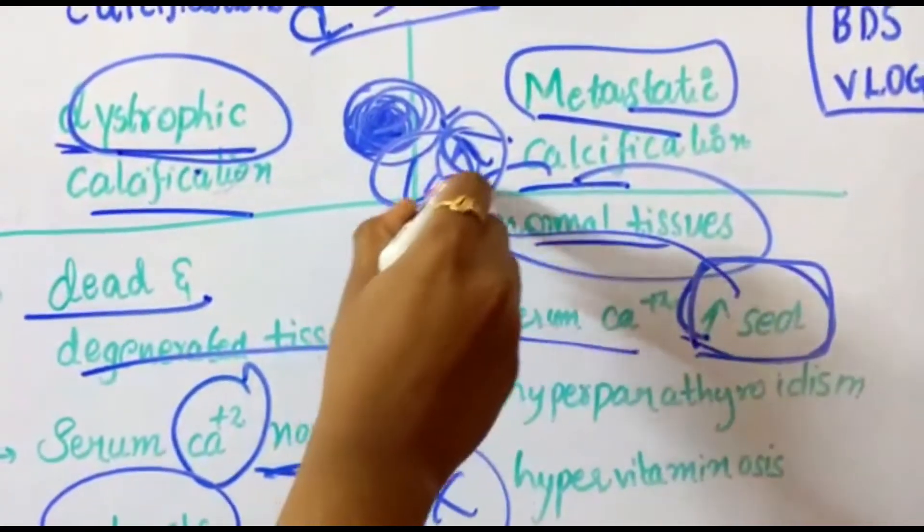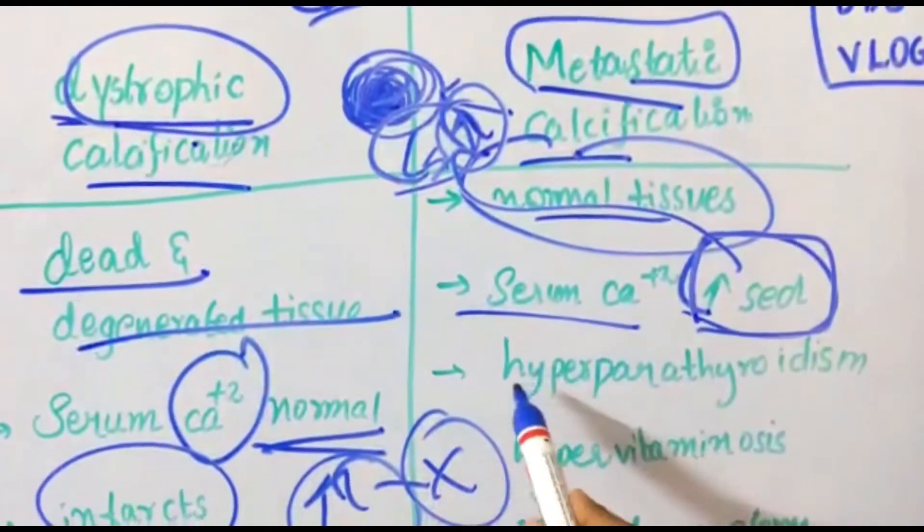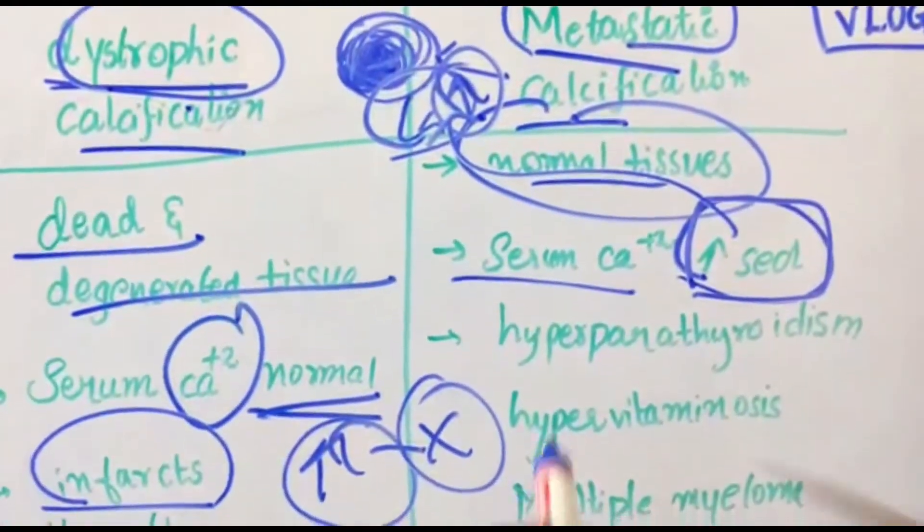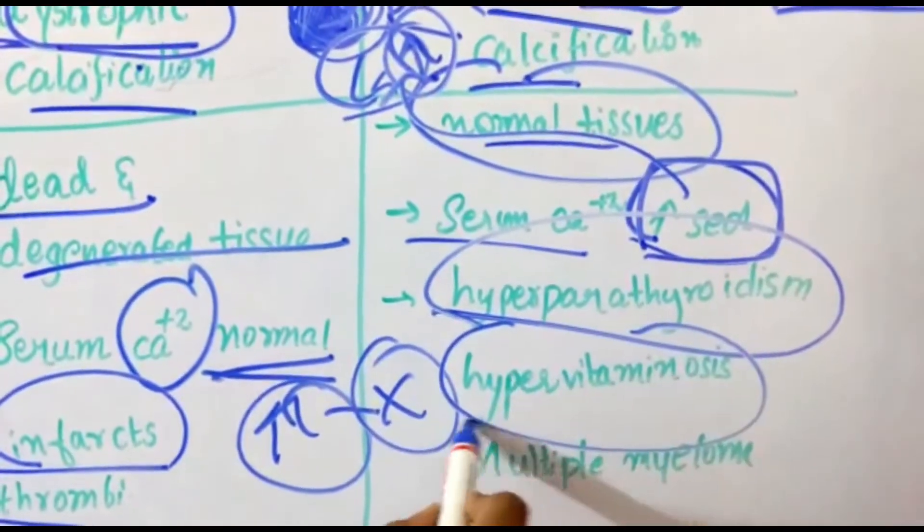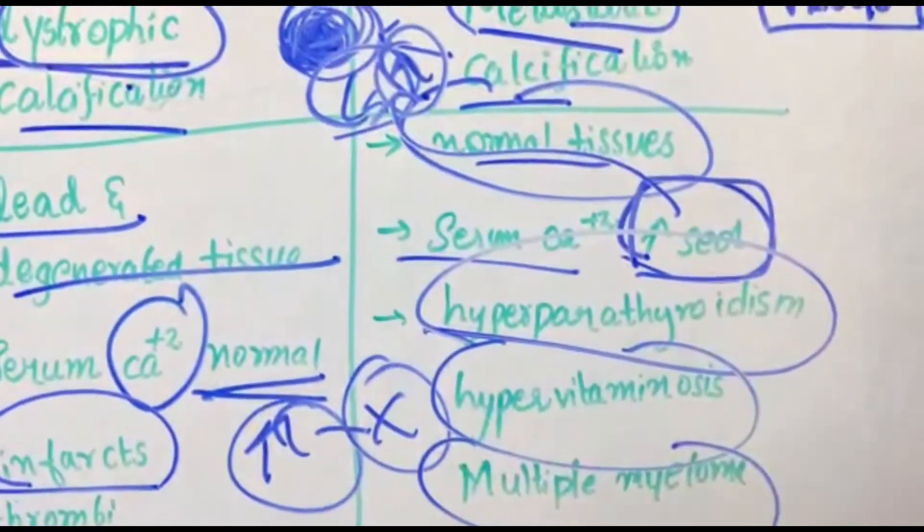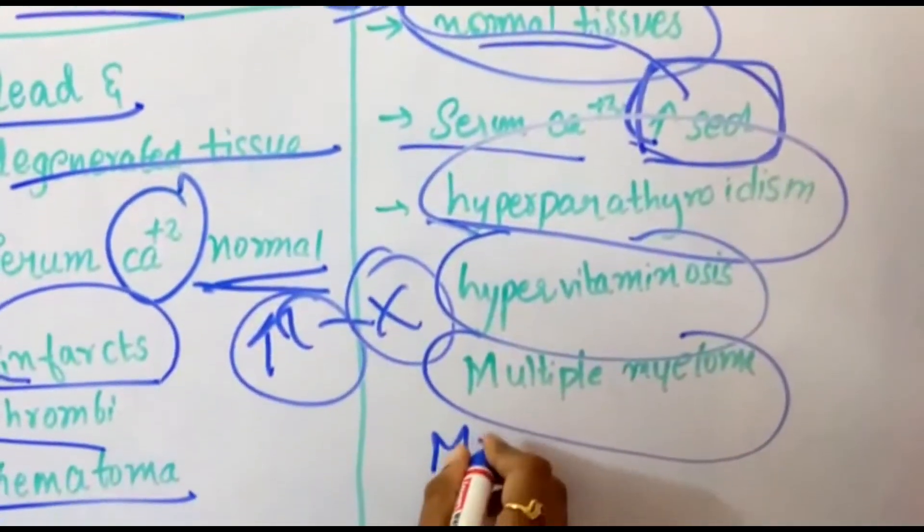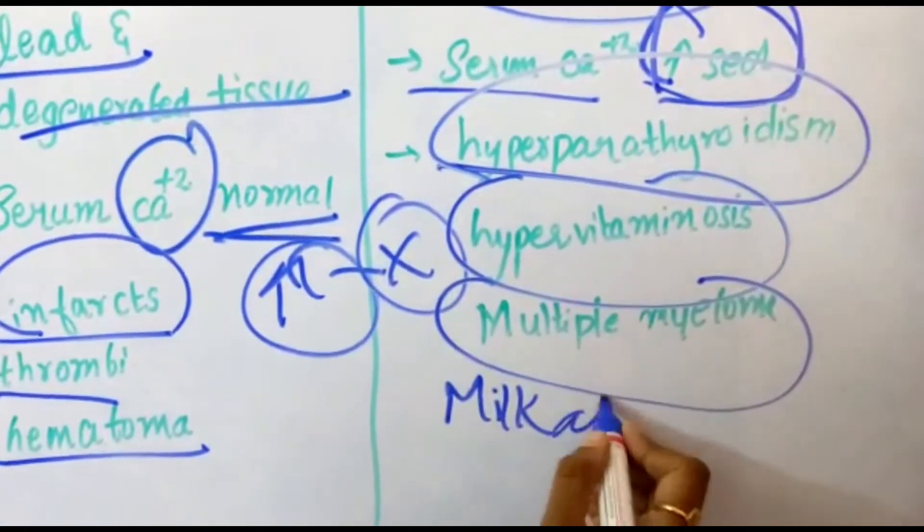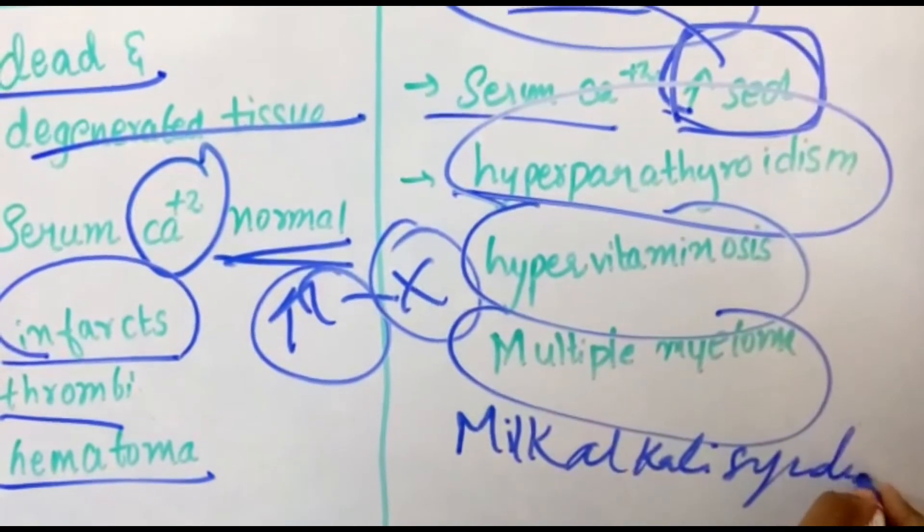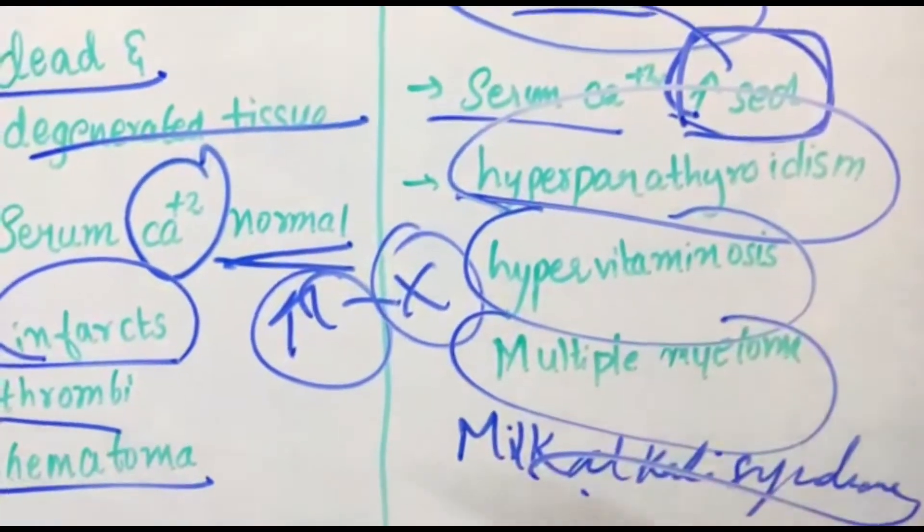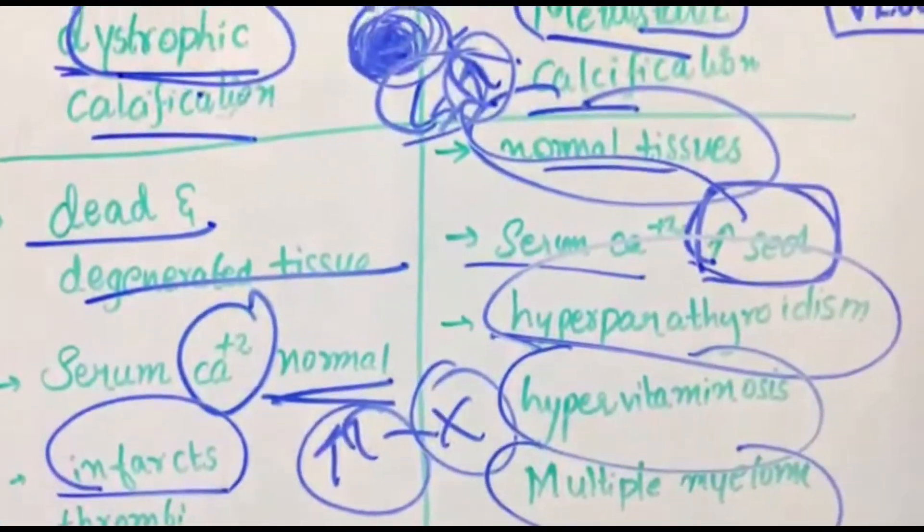Leading to formation of stones. Now where can it be seen? Hyperparathyroidism, hypervitaminosis, multiple myeloma-like diseases, and milk-alkali syndrome are examples. These are the simple differences between dystrophic and metastatic calcifications.